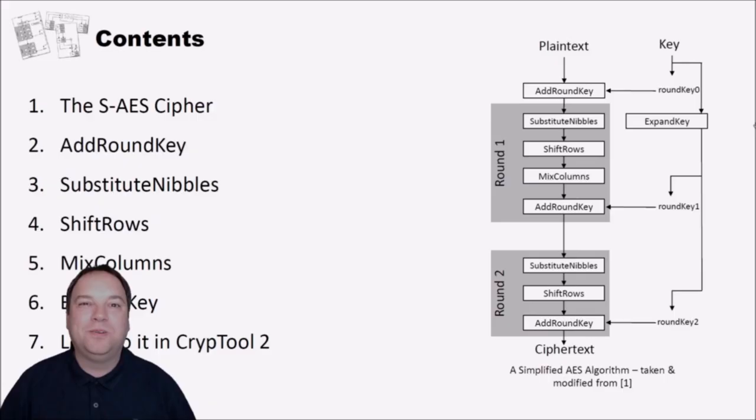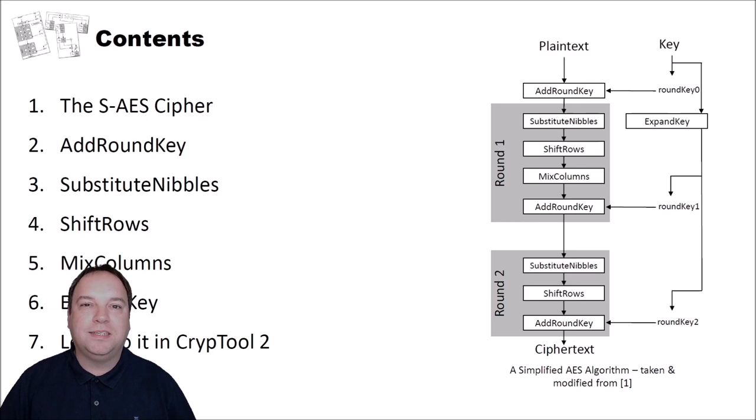Hello and welcome to a new video on cryptography for everybody. In today's video we will have a look at a very interesting cipher. The cipher's name is Simplified AES, a simplified version of the AES cipher. It is based on the ideas of the AES cipher, and its intention is that you can use it to learn how AES actually works. In this video we will have a deep look into the cipher — the building blocks and how the cipher works.